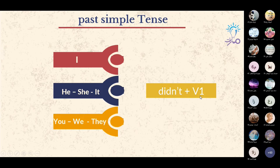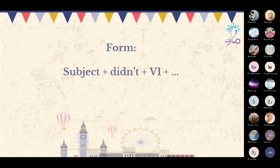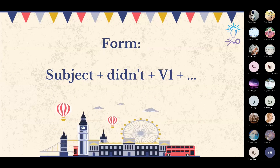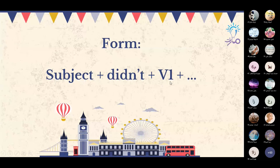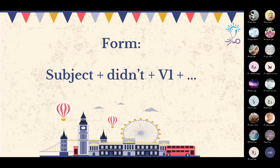شكل النفي بالماضي البسيط: Subject + didn't + verb one + complement. فاعل وdidn't وverb one — ليس verb two. في النفي نستخدم verb one الشكل الأساسي للفعل، أما الجمل المثبتة المؤكدة فتستخدم verb two.